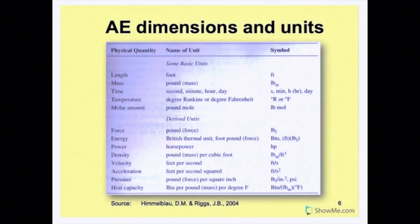Time is either the second, minute, hour, or day. It's the same as the SI for second and minute, but it's slightly different for hours. Sometimes we see H-R instead of just H for hour, and D-A-Y, the full spelling for day instead of just D in SI. Temperature, they use the degree Rankine or the degree Fahrenheit. It's more common to see degree Fahrenheit instead of degree Rankine.